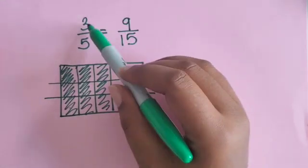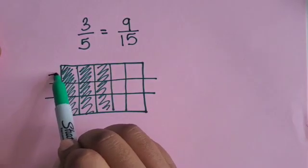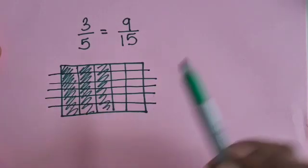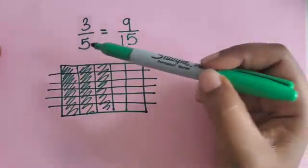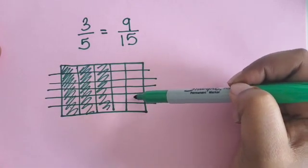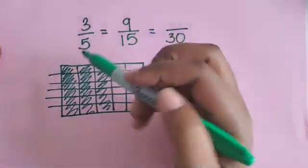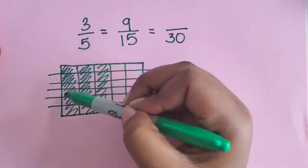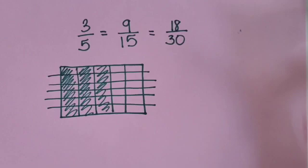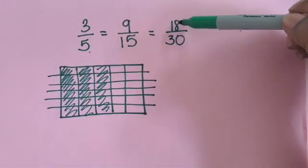So an equivalent fraction to 3 fifths is 9 fifteenths. If we wanted to partition each of those thirds in half, how many total parts would we have now? We get 5, 10, 15, 20, 25, 30 total parts. And the shaded parts: 3, 6, 9, 12, 15, 18 are shaded in. So here we have equivalent fractions to 3 fifths, which are 9 fifteenths or 18 thirtieths. All three of these fractions are equivalent because they represent the same amount.